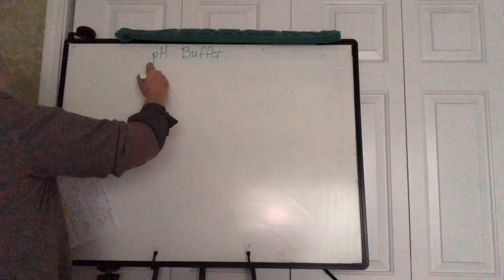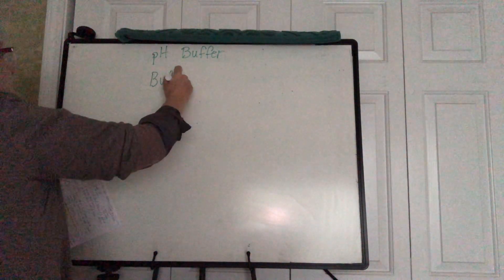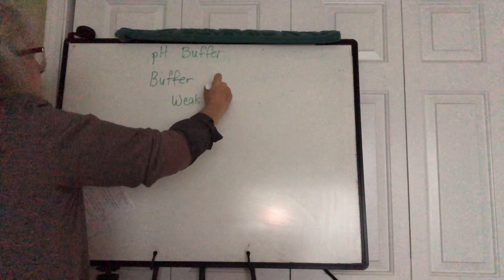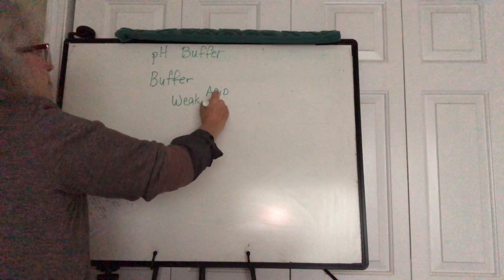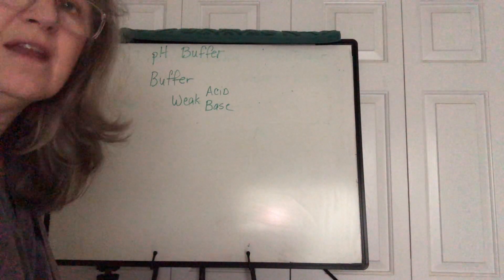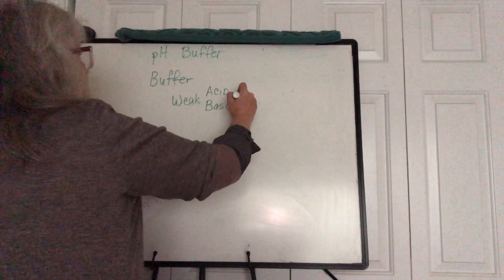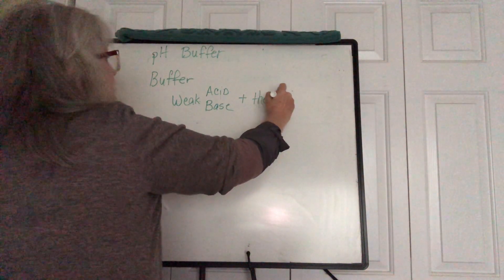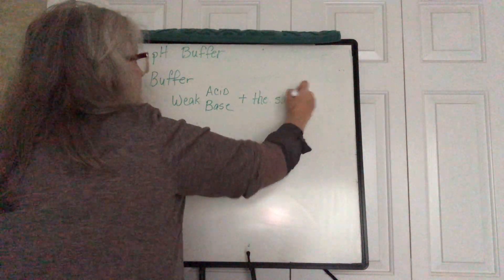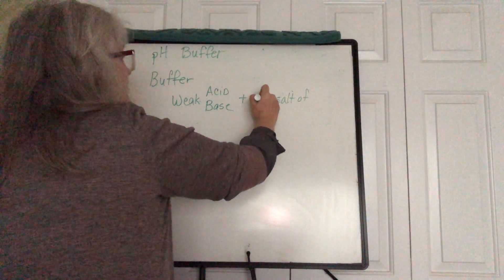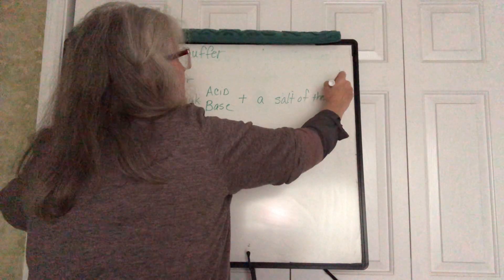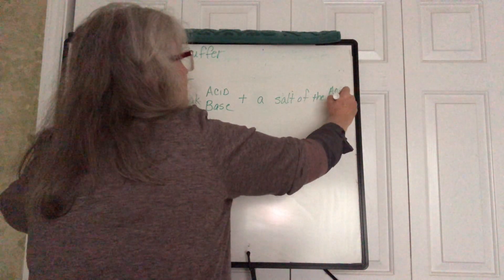An acid-base buffer is going to be either a weak acid or a weak base — not both, just one or the other — plus a salt. It's the salt of the weak acid or weak base that you're using. Words don't work well for me here, so let's look at what this actually means.